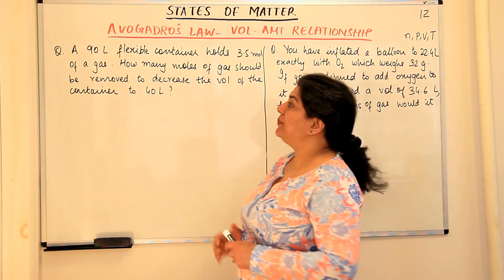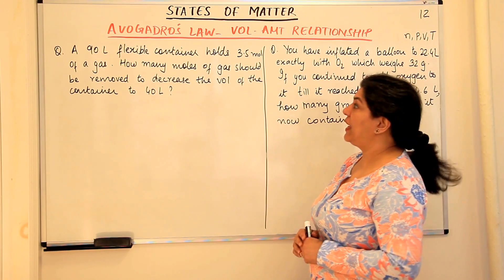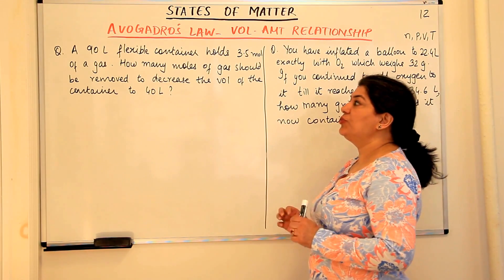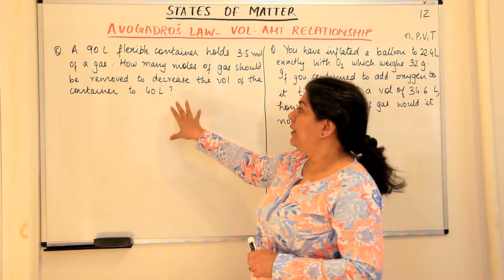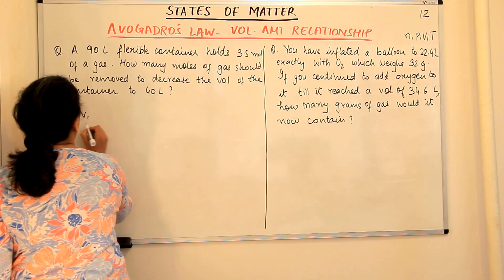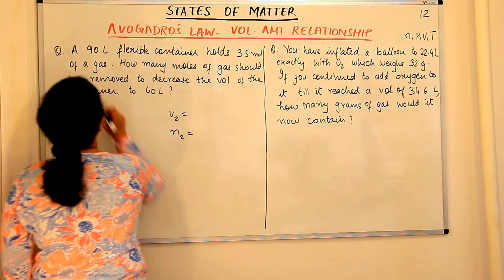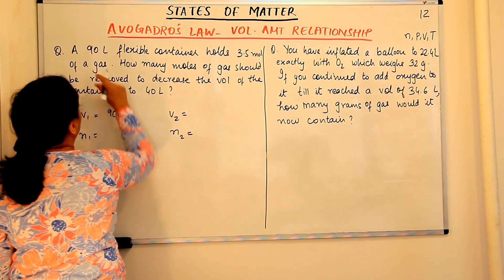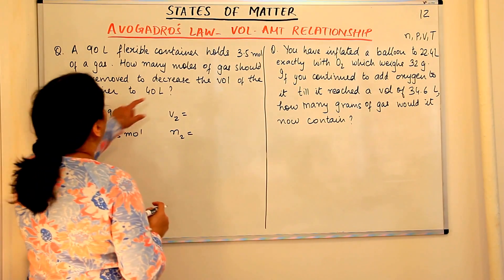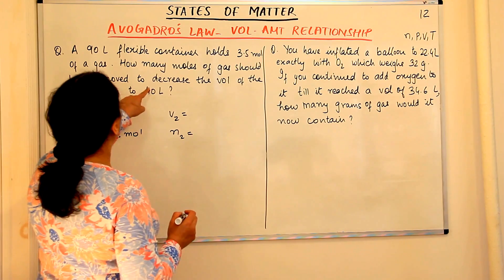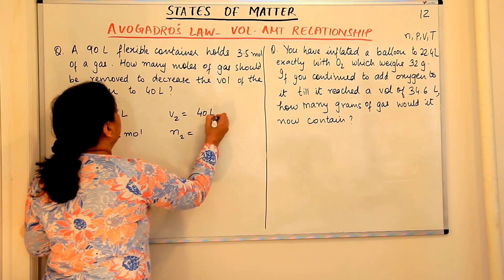Question 3: A 90-liter flexible container holds 3.5 moles of a gas. How many moles of gas should be removed to decrease the volume of the container to 40 liters? Identifying the variables: V₁ = 90 liters, N₁ = 3.5 mol, V₂ = 40 liters, and N₂ is to be found out.